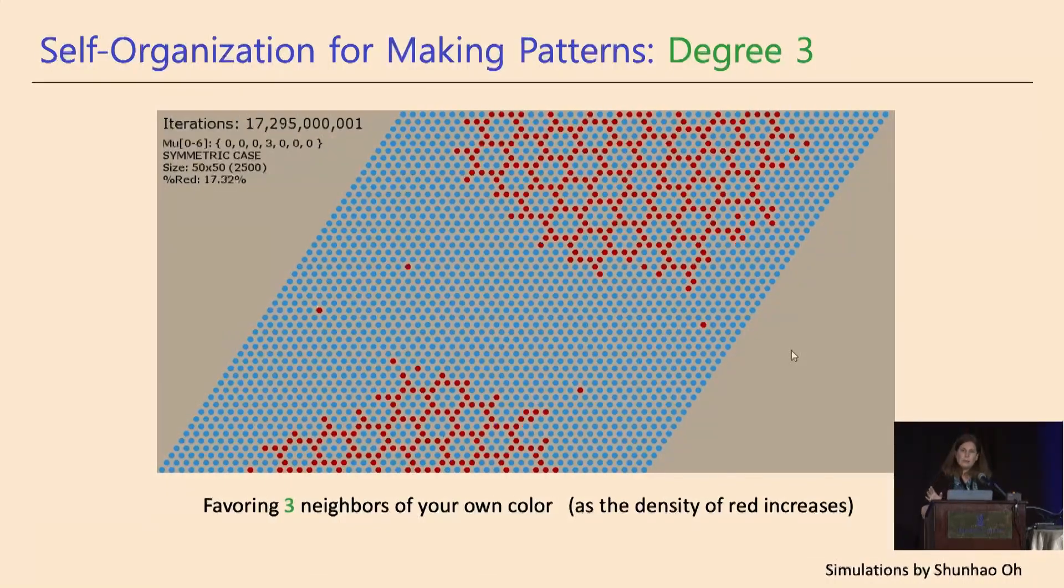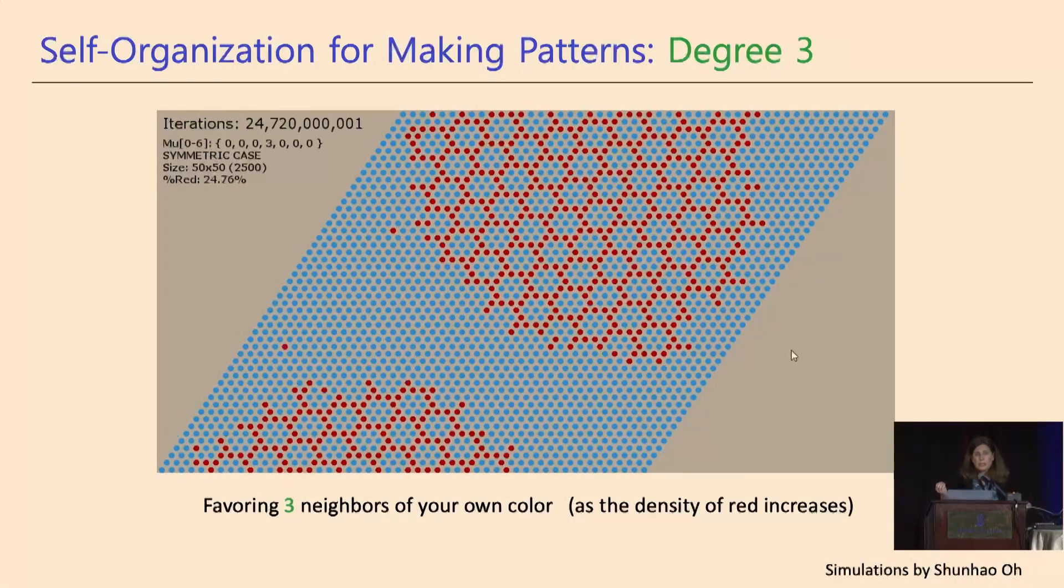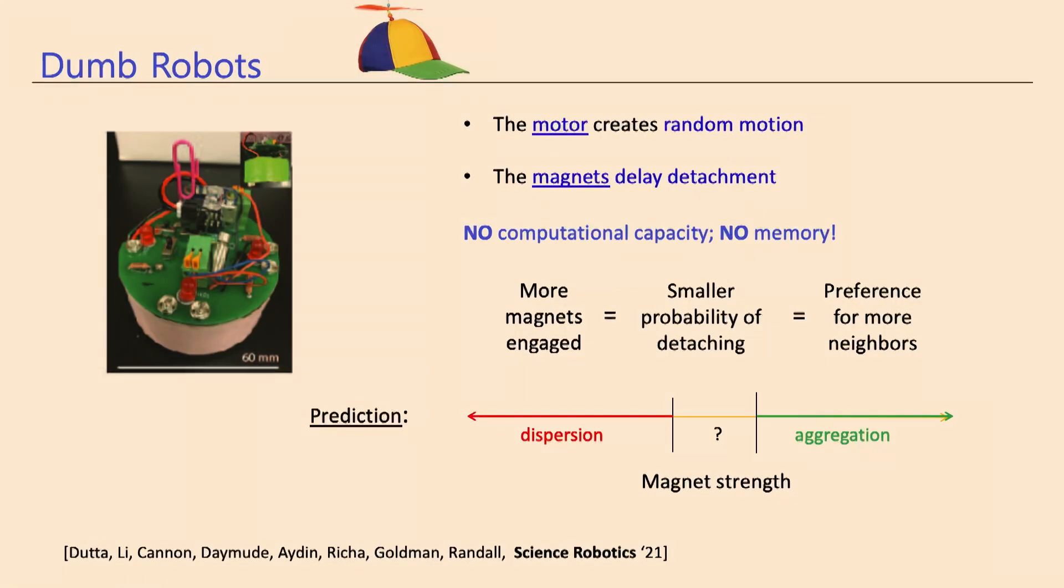So the last thing I'm going to leave you with is we went farther. This algorithm was so simple that I'm going to come back to my robots. We were able to implement it with robots that instead of having things move preferentially towards more neighbors, we had them move with less probability away from things with more neighbors.